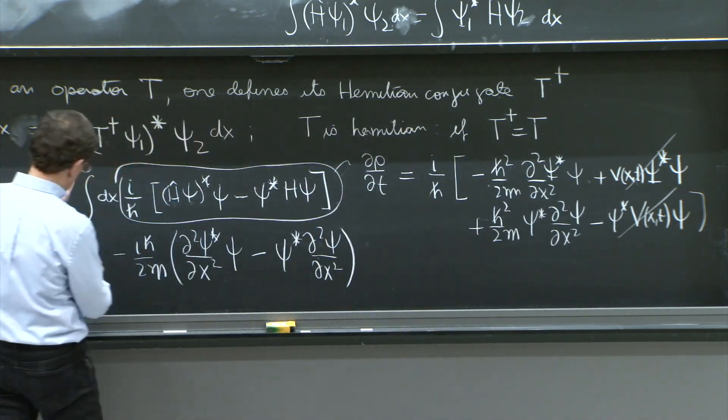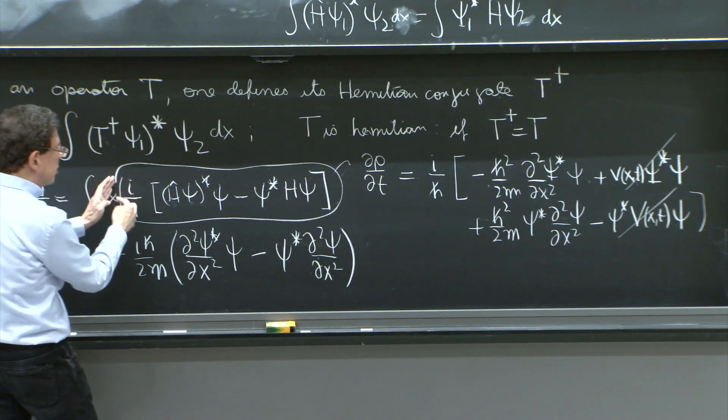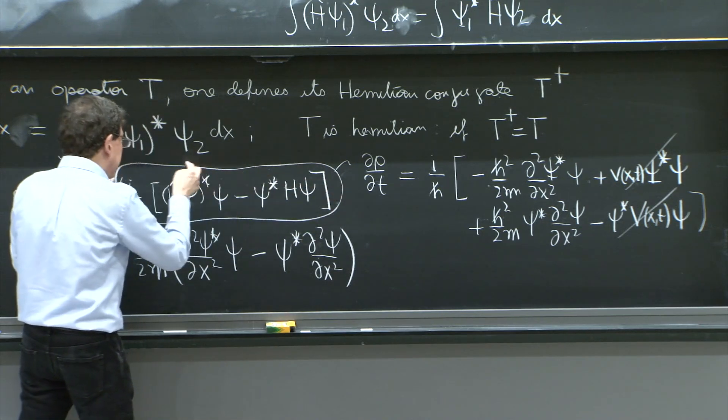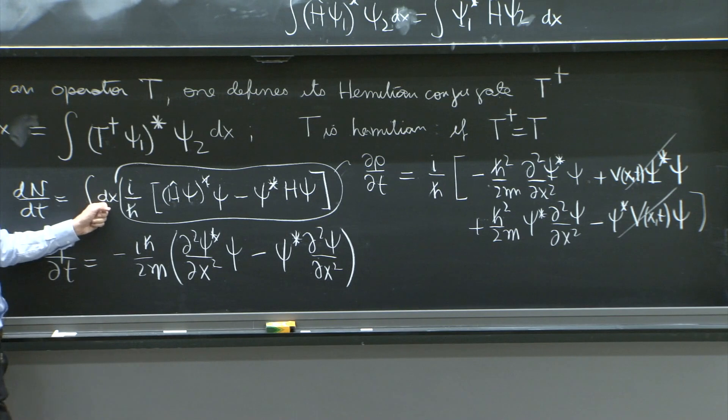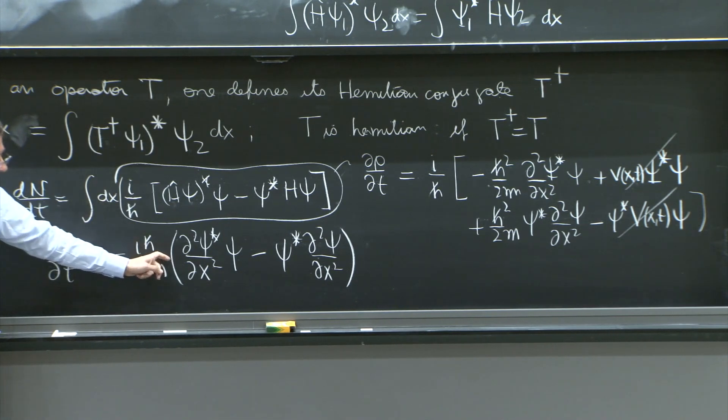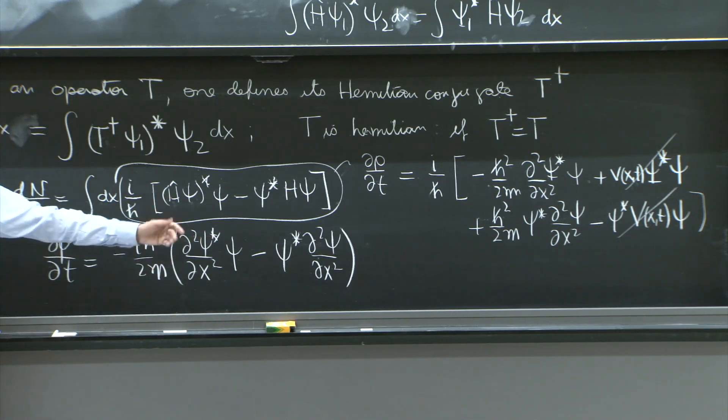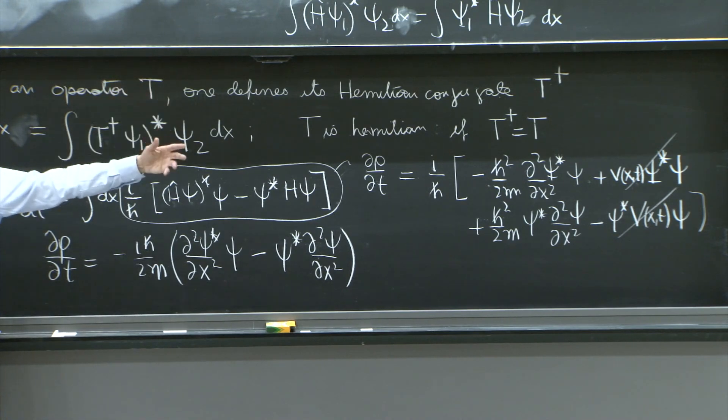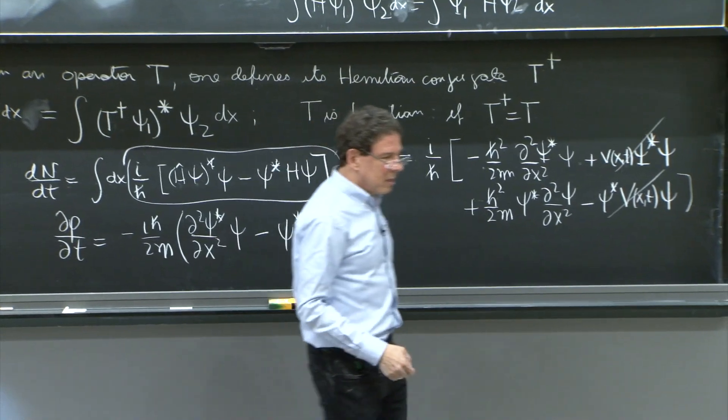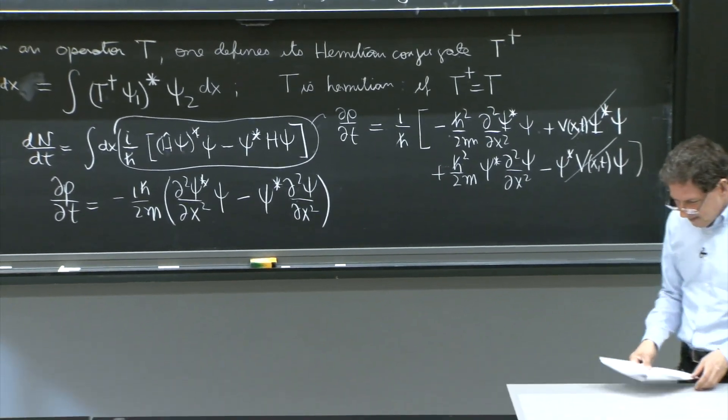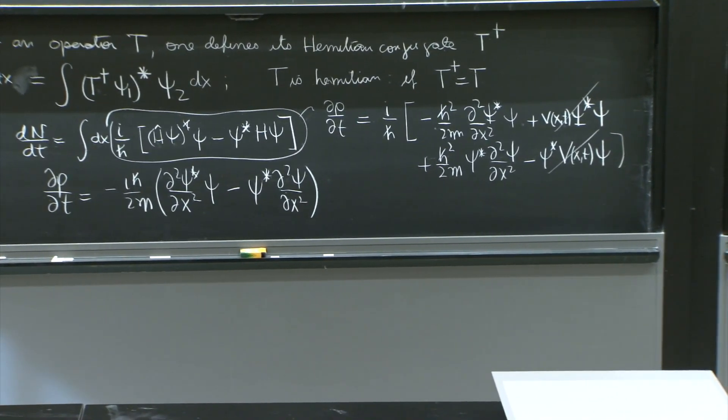So remember, we're computing here d rho/dt, which is all this thing circled here. And it's to be integrated over x. So if I could show this is a derivative with respect to x, that total x derivative, then the integral would go to the boundaries. And I would have a chance to make it 0.